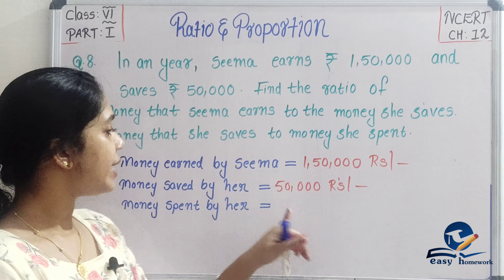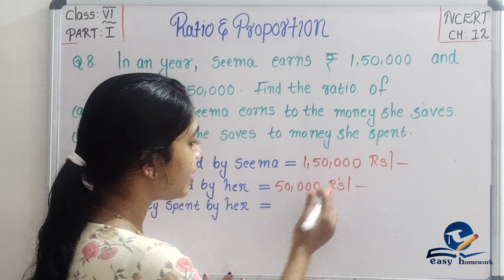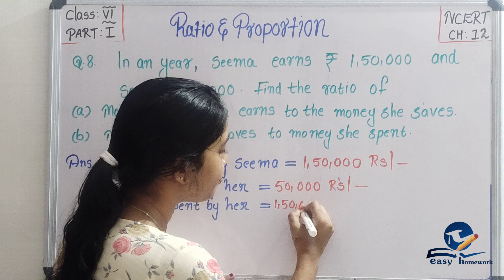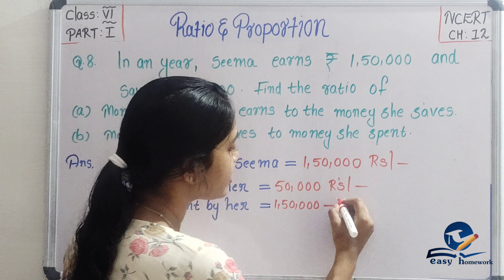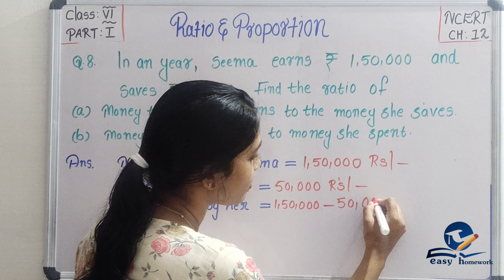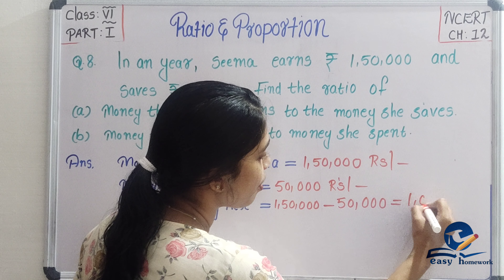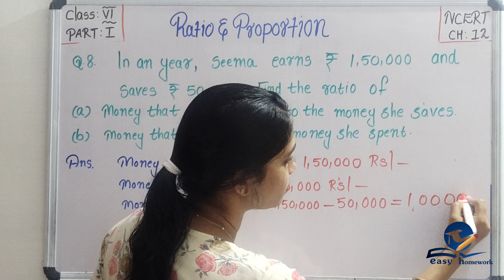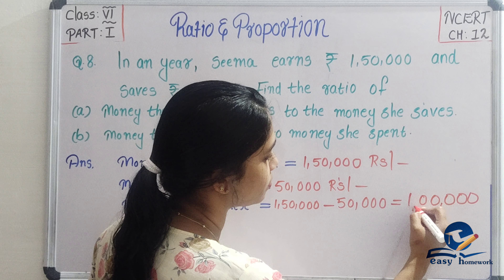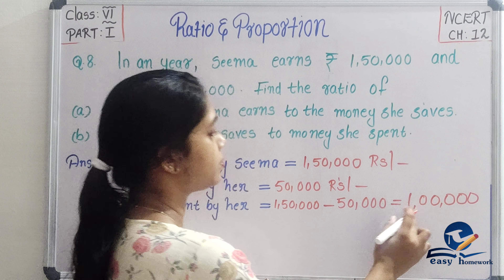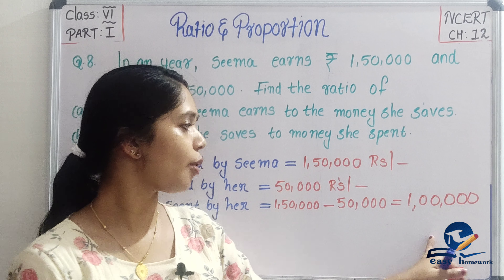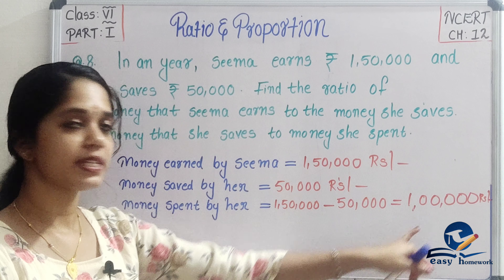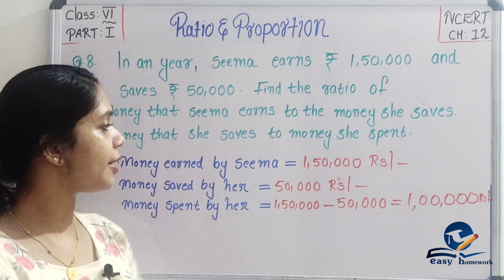How do you find money spent? We do Rs. 1,50,000 minus Rs. 50,000, which gives us Rs. 1,00,000. So Sema spends Rs. 1,00,000. That's clear. Now let's check the ratios here.